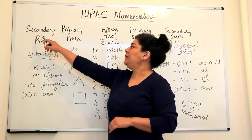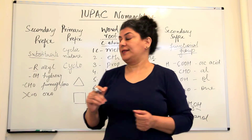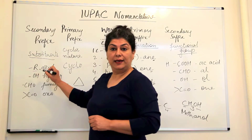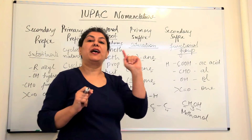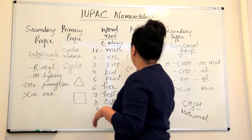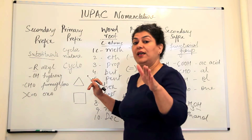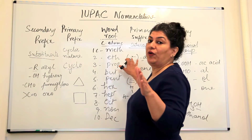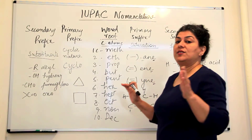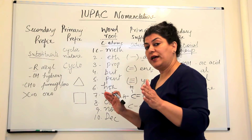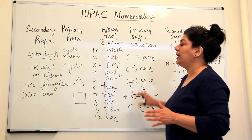The last part of the name is the secondary prefix. The secondary prefix tells us about the substituents, which are usually alkyl groups. An alkyl group is an alkane from which one hydrogen has been removed. Methane is CH4, so the alkyl group from methane is CH3 — known as methyl. Ethane is C2H6, so removing one hydrogen gives C2H5, the ethyl group. Then propyl, butyl, pentyl, and so on.